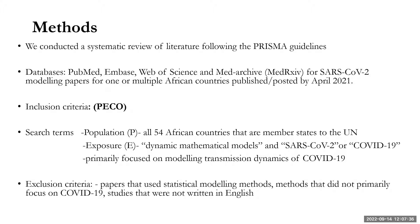We conducted a systematic review of literature based on PRISMA guidelines. We looked at various databases such as PubMed, Embase, Web of Science, and MedArchives for SARS-CoV-2 models published for one or more African countries, including preprints posted by April 2021 as well as published literature. Our inclusion criteria used PECO terms: the population being all 54 African countries that are member states to the UN, and our exposure of interest being dynamic mathematical models of SARS-CoV-2 or COVID-19, focusing primarily on models that looked at transmission dynamics.